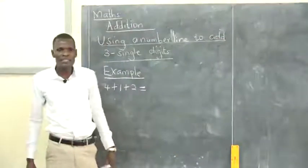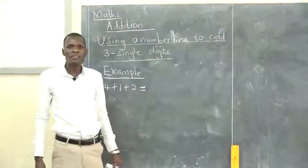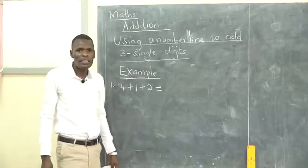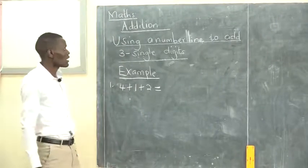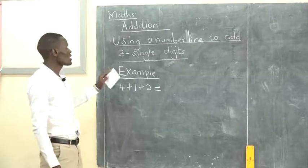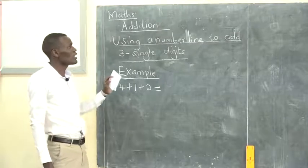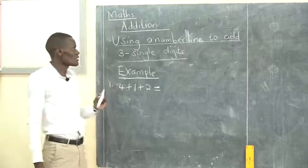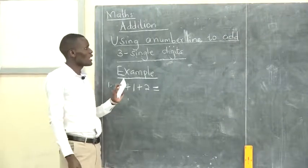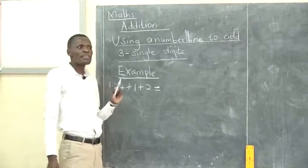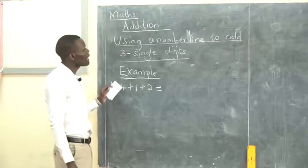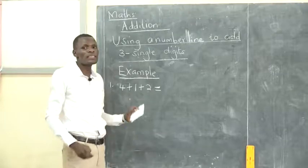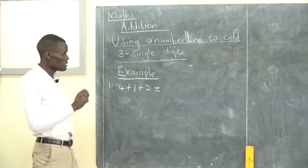How are you, boys and girls? My name is Teacher Edwin. I want us to learn today. Our strand is addition, and the substrand is using a number line to add three single digits. In our previous lesson we learned how to add two single digits using a number line, but today we are adding three single digits.